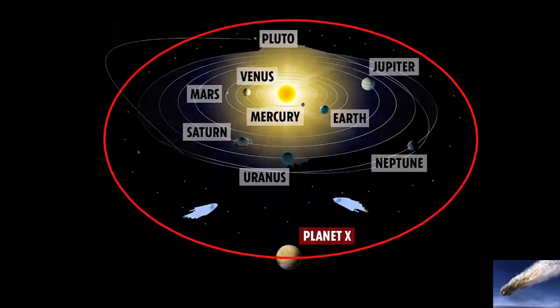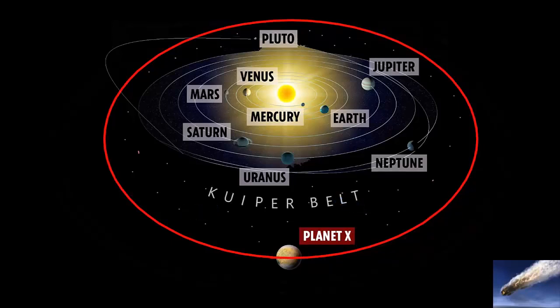The theory states that Planet X orbits the Sun. Its tilted orbit slowly rotates, and Planet X passes through the Kuiper belt of comets every 27 million years, knocking comets into the inner solar system.